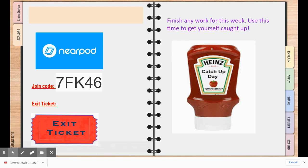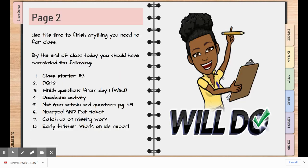Once you're finished with that, catch up on any missing work for this week. So by the end of class today, you will have completed class starter number two, daily quiz number two, finish the questions and turn them in from the Wall Street Journal article, the two dead zone activities, the National Geographic article and questions, your Nearpod and exit ticket, and then catch up on any missing work if you have time.